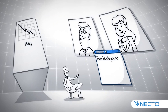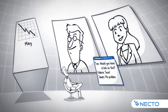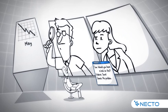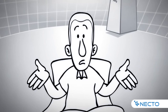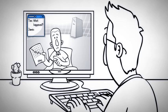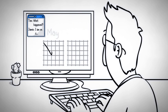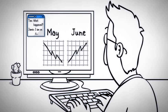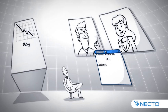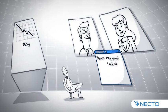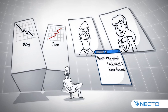Instead of sending out-of-context emails, Tom pings James and Valerie within the system, asking what happened. James discovers that the decrease in sales in May has been compensated by a substantial increase in June. He updates the discussion in Necto, showing the increase to the team.